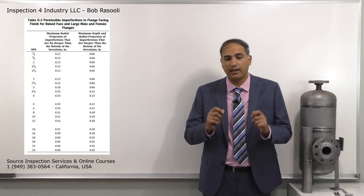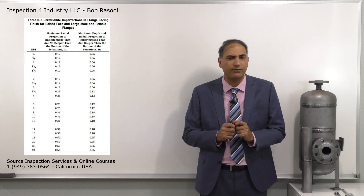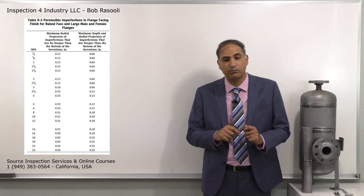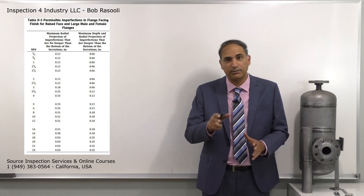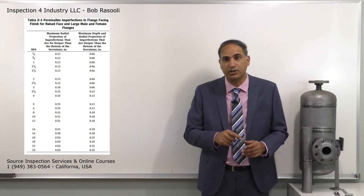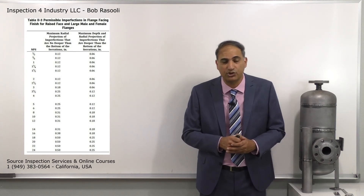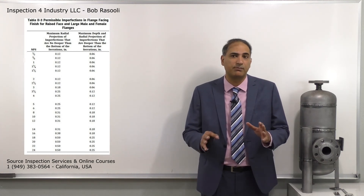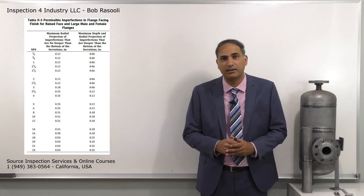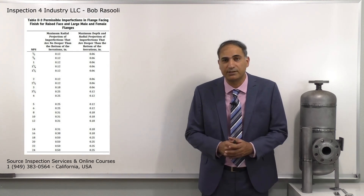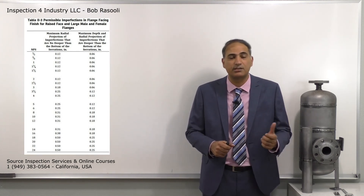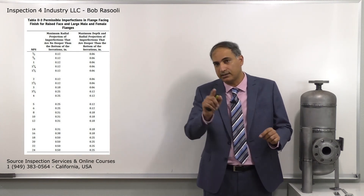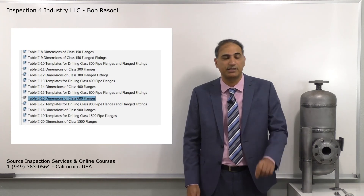To summarize the evaluation: first determine if the imperfection depth is less than half the serration depth - if so, ignore it. If it's more than half but not deeper than the serration, use the middle column. If deeper than the serration, use the last column with more stringent requirements. For the exam, close-book knowledge includes the half-depth rule. For table-based questions, locate Table 2-3 using your bookmark, input the flange size and damage size, and select the correct answer.